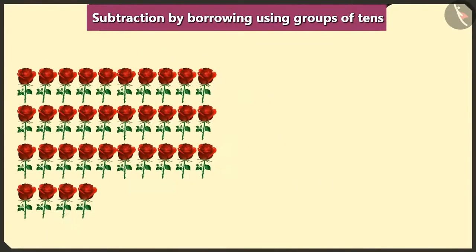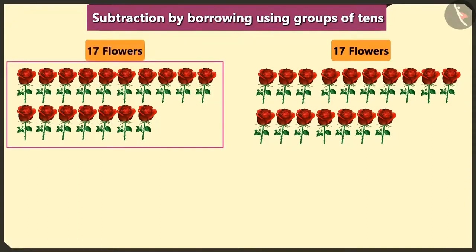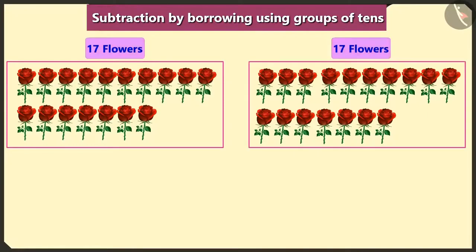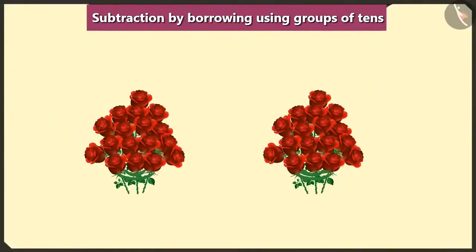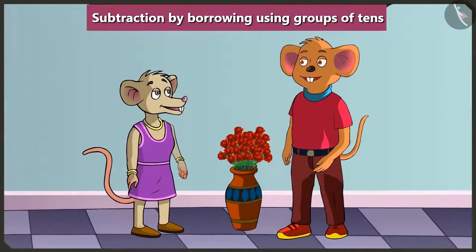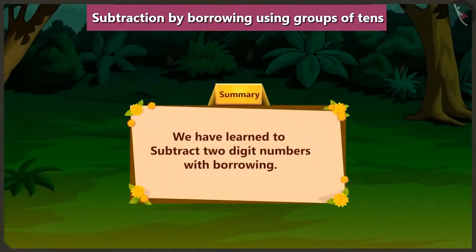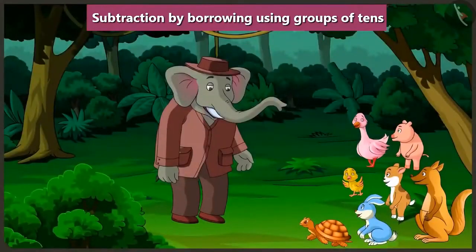So, if I make a bouquet with 17 flowers from 34 flowers, then you too will have 17 flowers left to make a bouquet. Oh wow! We would have the same number of flowers. Now, let's both make a bouquet by taking all our flowers together. These beautiful bouquets are ready. Let's put these in that flower vase. It looks beautiful! Okay Chichi, now I have to go. See you! Children, I hope you have learned how to subtract 2-digit numbers with borrowing. In the next video, we will understand what mistake Chichi makes while performing subtraction with borrowing.